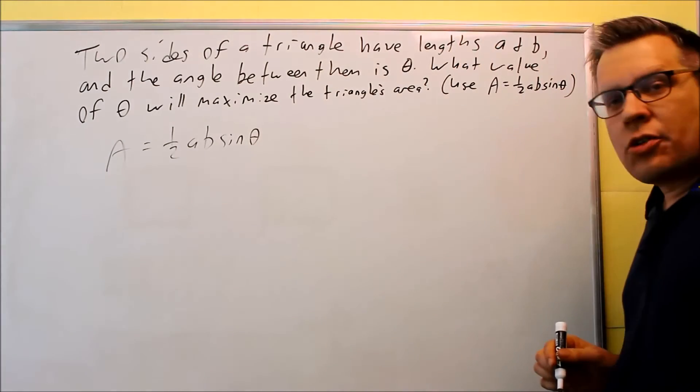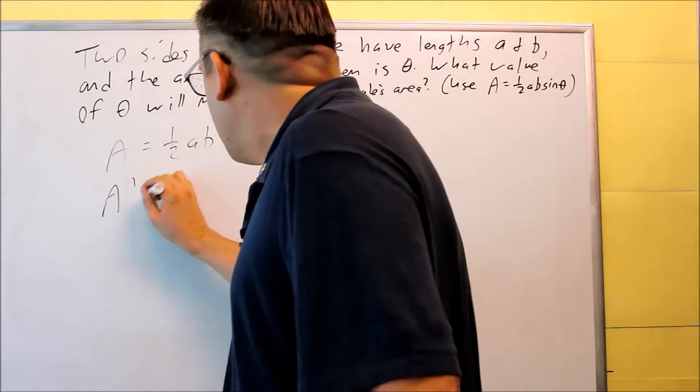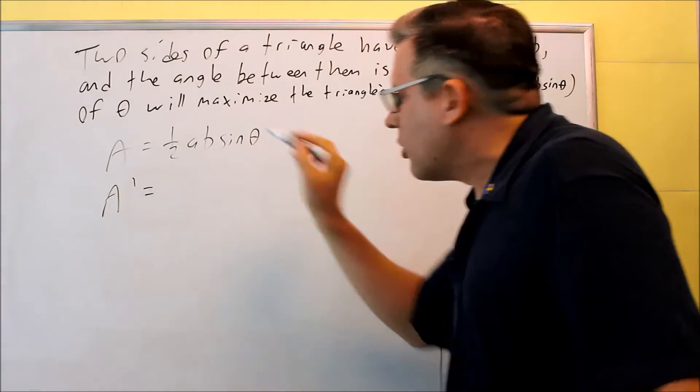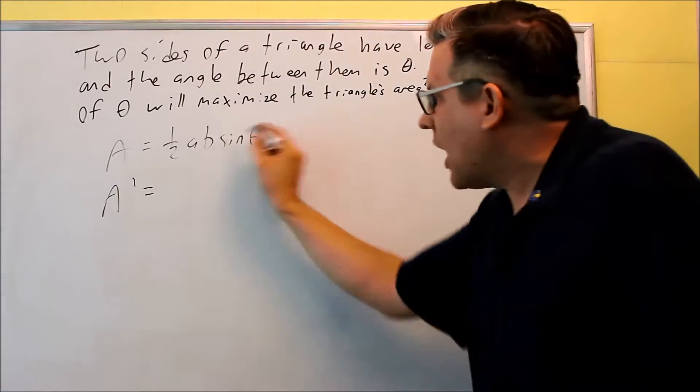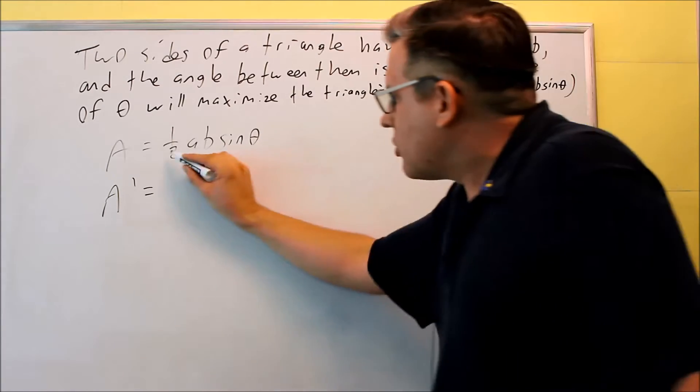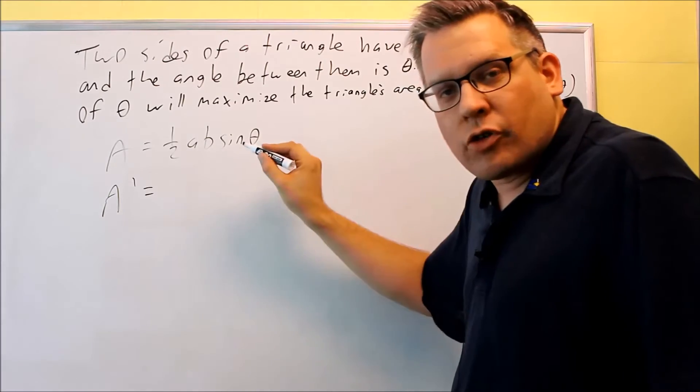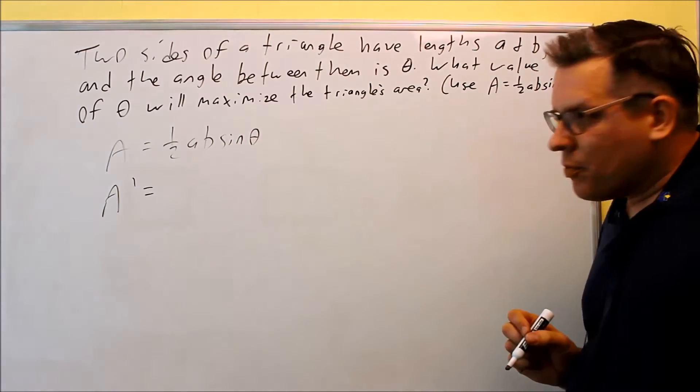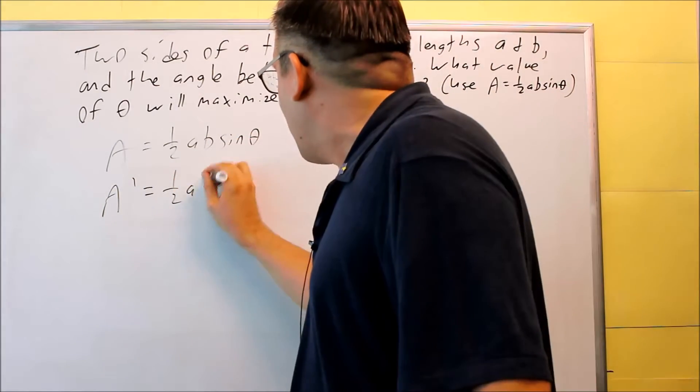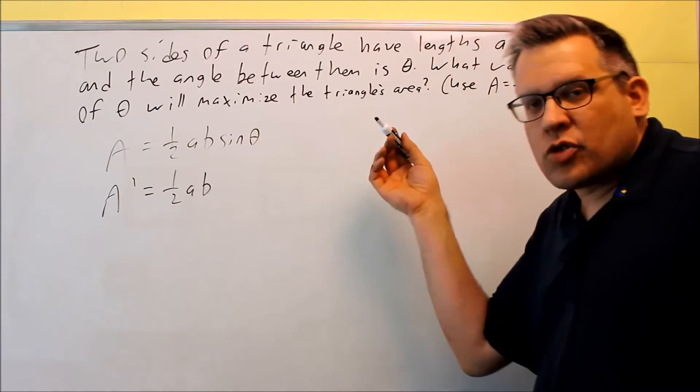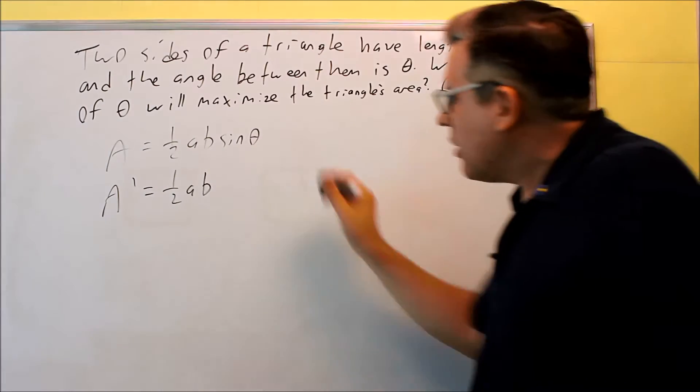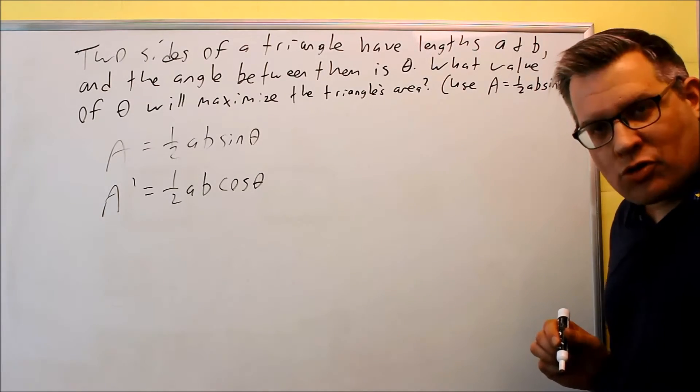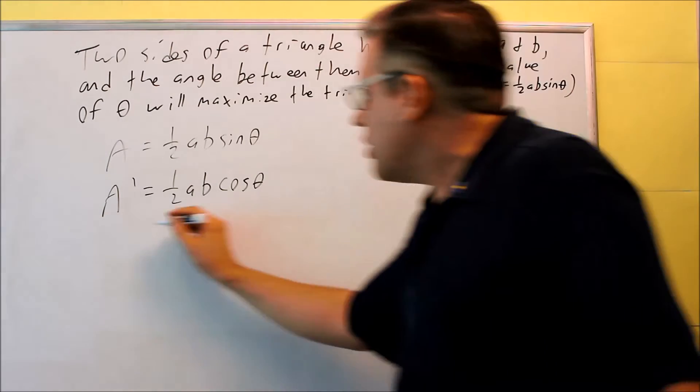Now we want to take the derivative of this. When we do the derivative, remember that your a and b are considered constants here, so you can think of this as one big number times sine theta. When you do that you're not going to have to use a product rule because you're not taking the derivative with respect to a or b, you're taking the derivative with respect to theta. So we can treat all this as just a single number. When we do that, we're going to bring down the one-half ab, just the number you just bring down, just like if it was two sine theta you just bring down the whole two. The derivative of sine is cosine, so that right there is going to be your first derivative. No product rule needed on this one.